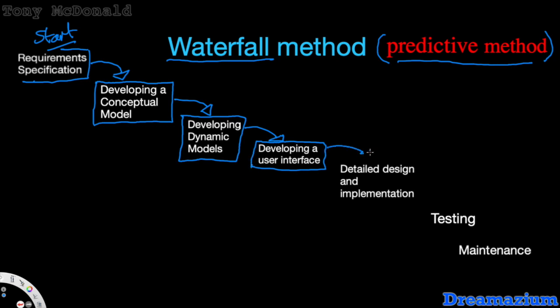You can start to see why it's called a waterfall method because you start at one point and then move down and move down, like water flowing down a waterfall. Then you've got the next stage, developing the user interface. That's going to have to be built, and then you move on to the detailed design and implementation.